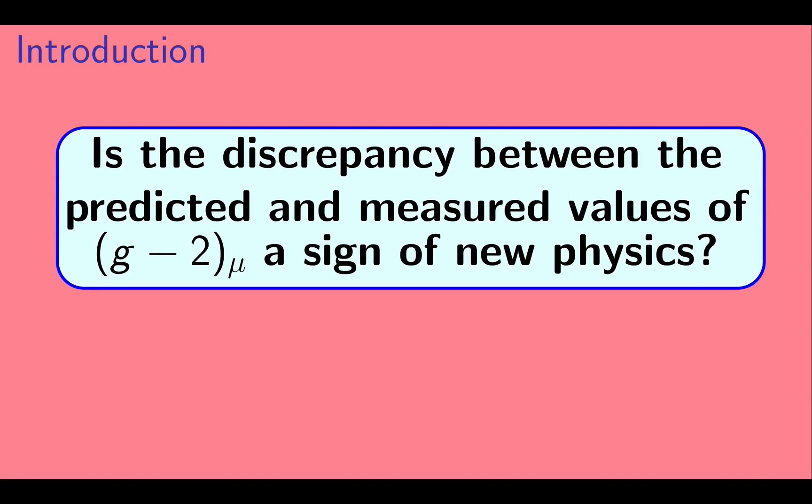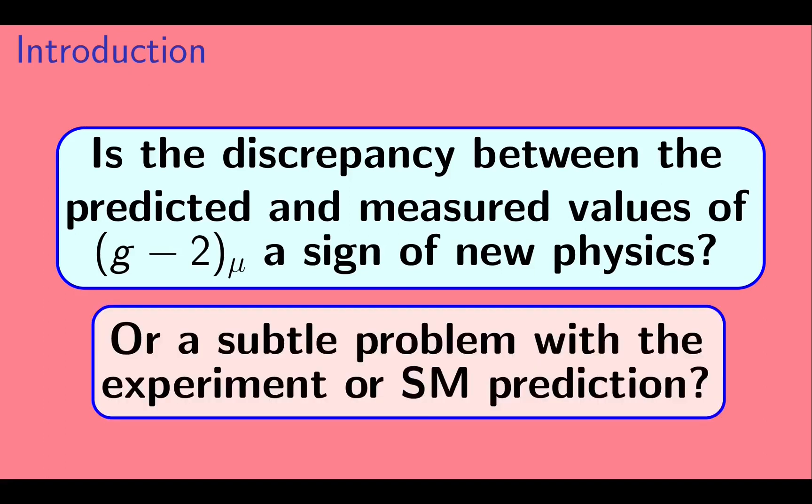So, what physicists are wondering is, is the discrepancy between the predicted and measured values of muon g-2 a sign of new physics? Or, is it just a subtle problem with the experiment or standard model prediction? In principle, it could also be just a statistical fluctuation, but the effect is rather large for that to be the explanation.